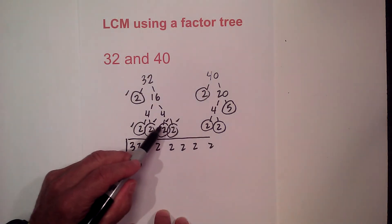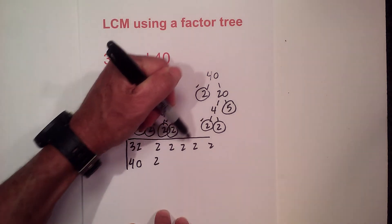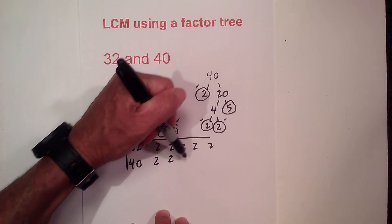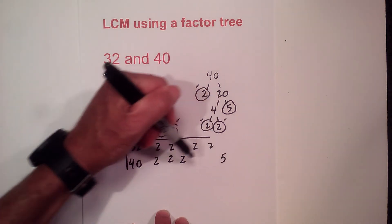So let's double count: 1, 2, 3, 4, 5. I have five 2's. Then for the 40 I will write a 2 and then another 2 and another 2. I am out of 2 so I will skip this 2 and this 2 and write a 5.